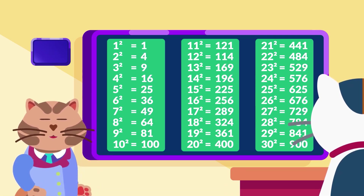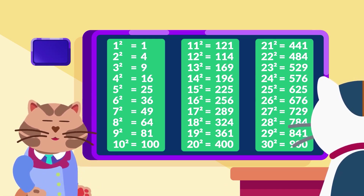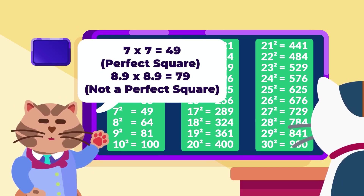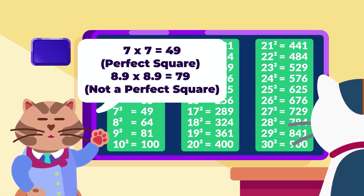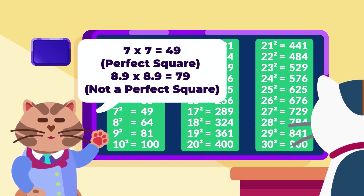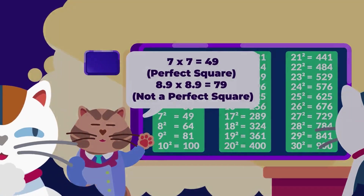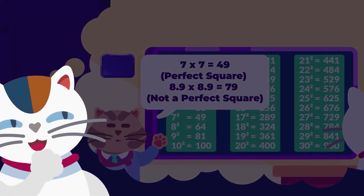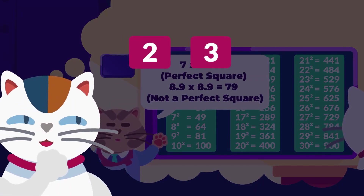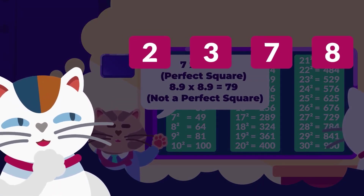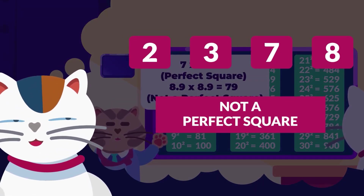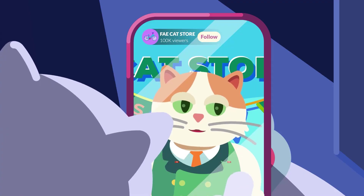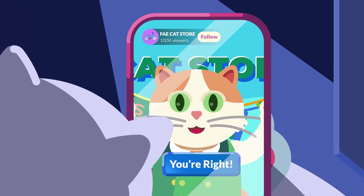However, it doesn't work in the opposite way, as seen with 79, which isn't a perfect square despite ending in 9. So always keep in mind that if the unit digit is 2, 3, 7, or 8, the number is definitely not a perfect square. This rule applies even to larger numbers.